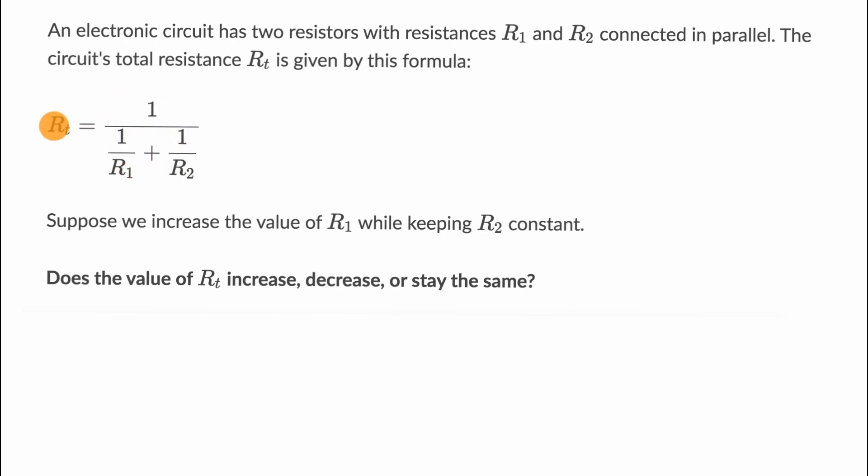There's some quantity R sub T that's equal to one over, and then in the denominator, we have one over R1 plus one over R2. So if we increase the value of R1 while keeping R2 constant, what happens?